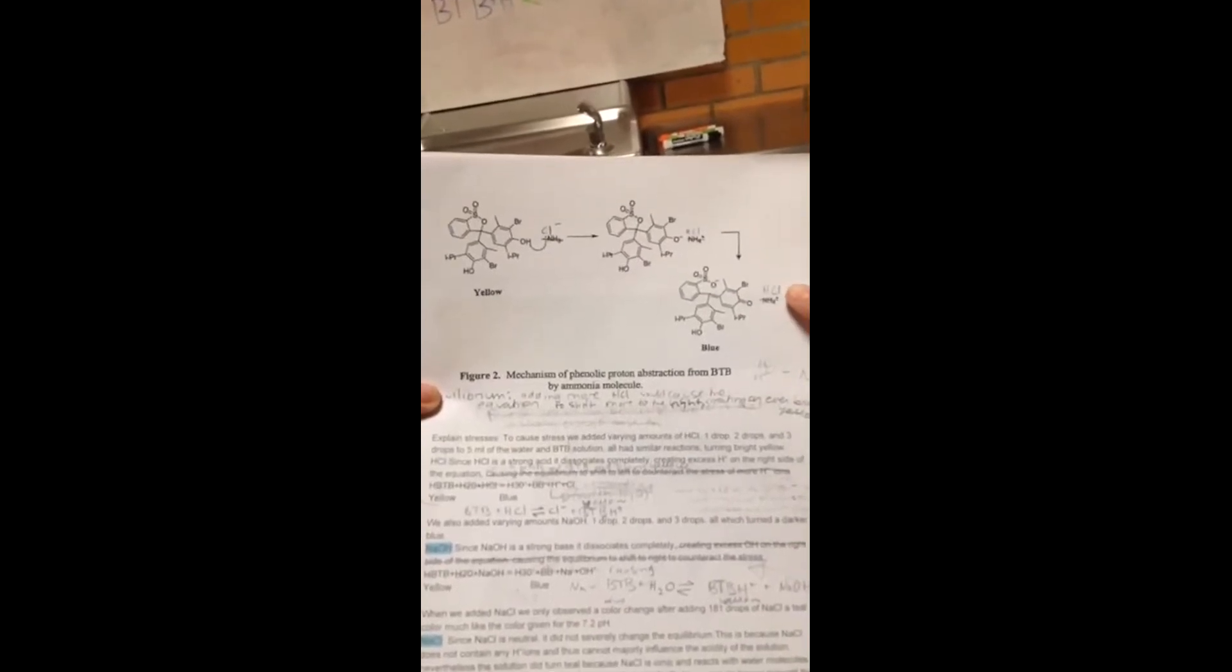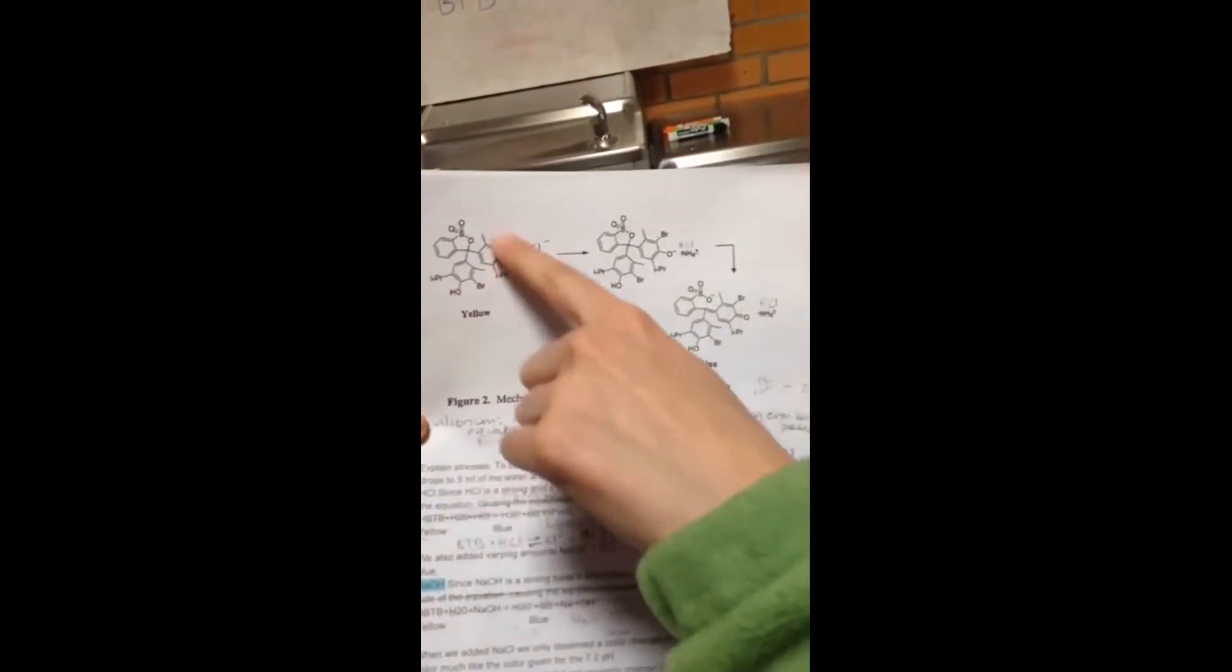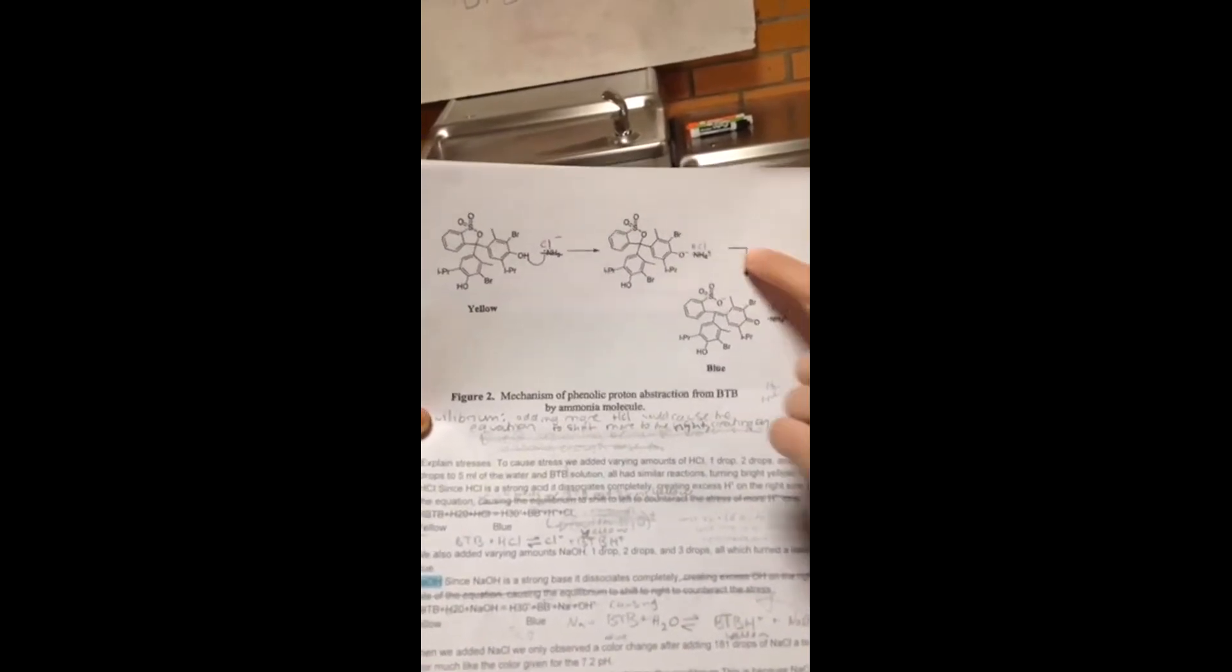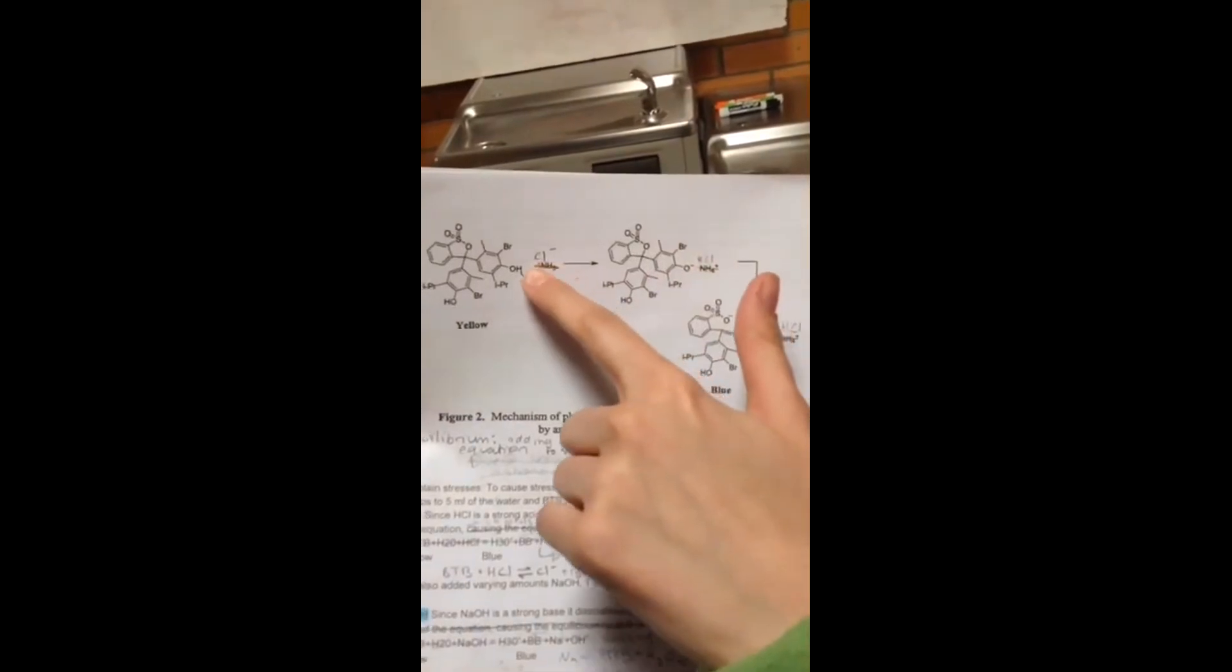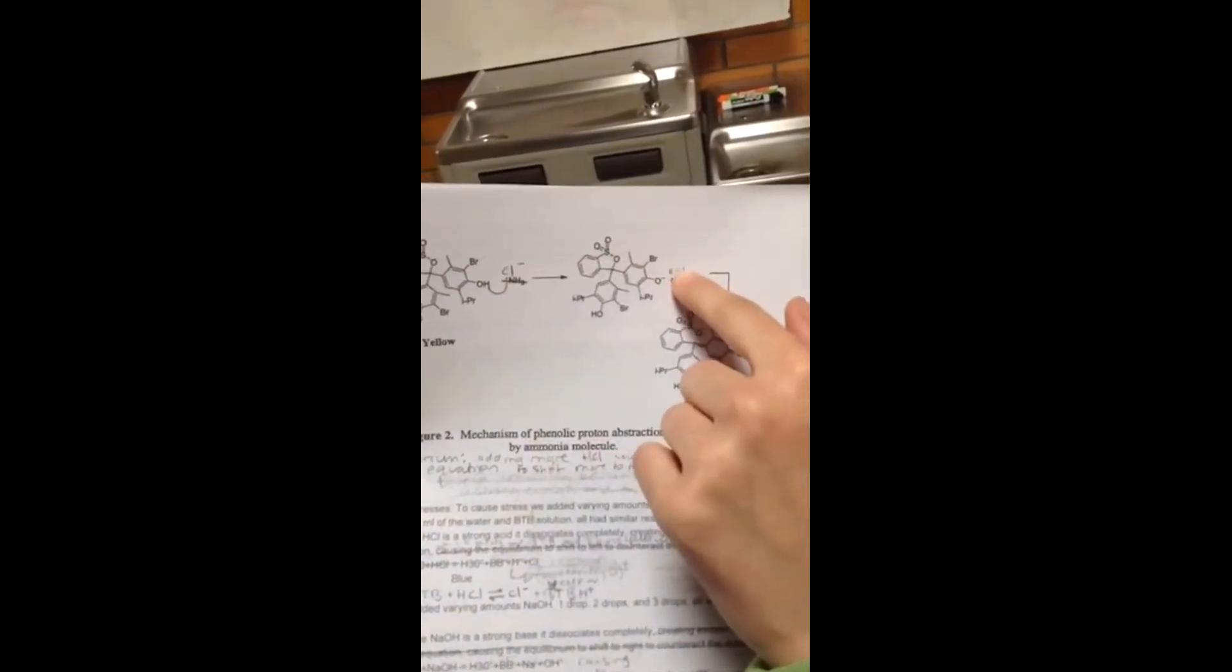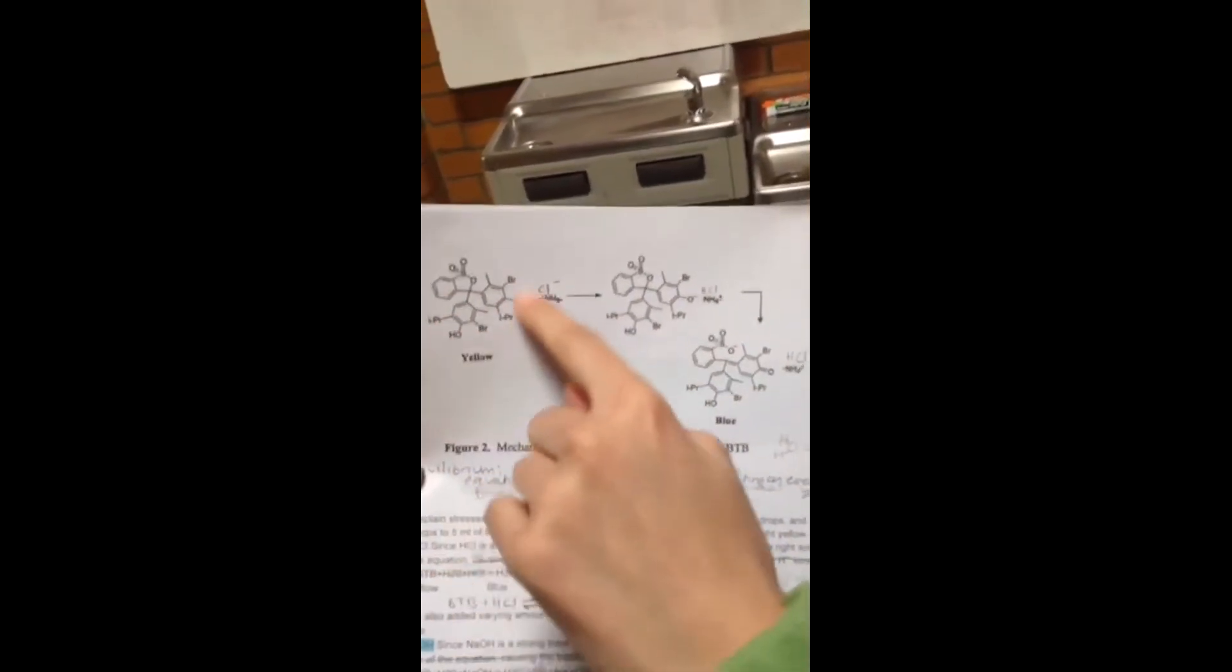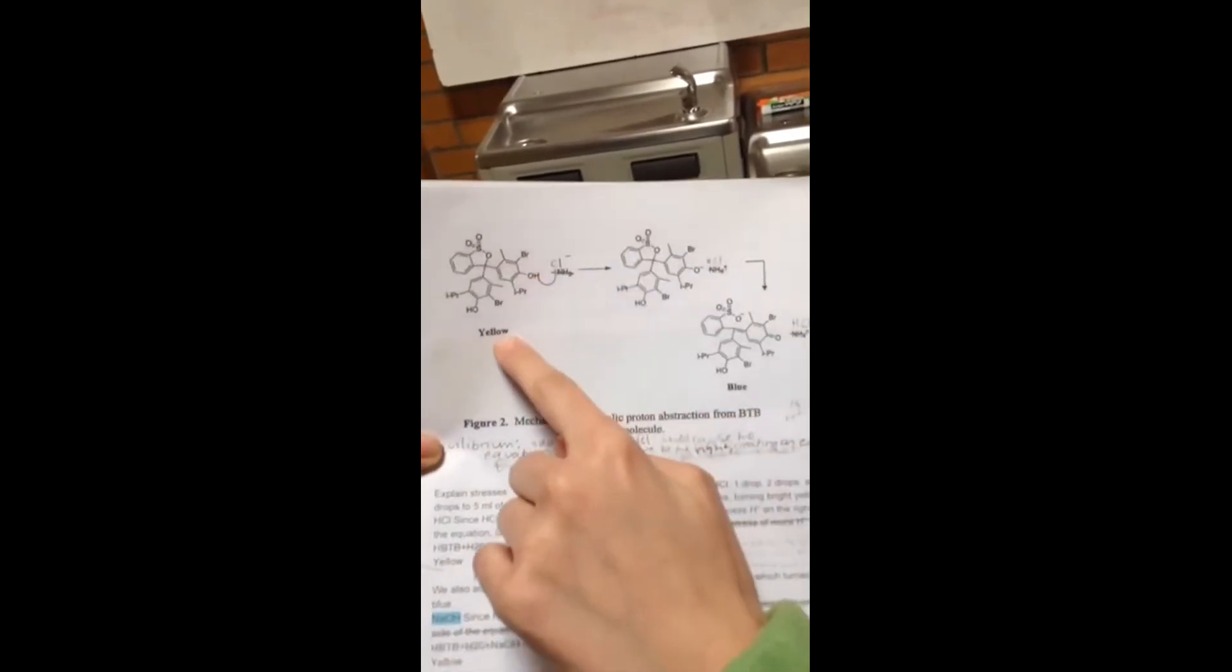When HCl reacts with the bromothymol blue, it first dissociates, the HCl dissociates, and then the H from the HCl combines with the bromothymol blue to turn it yellow.